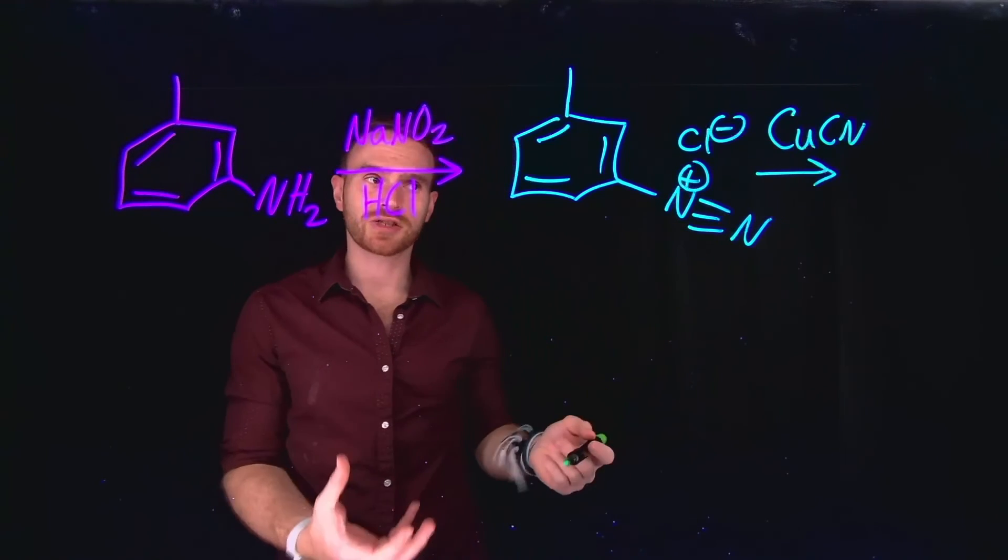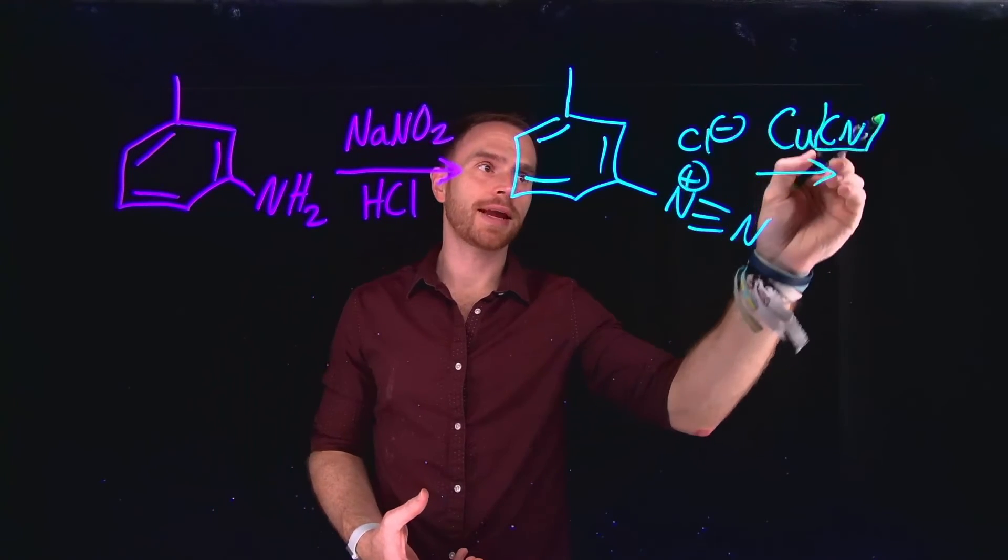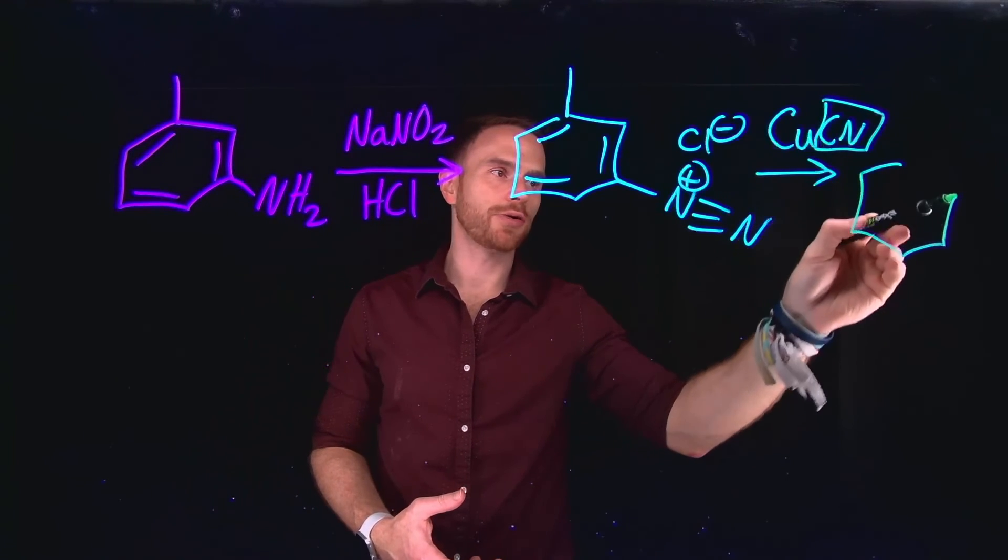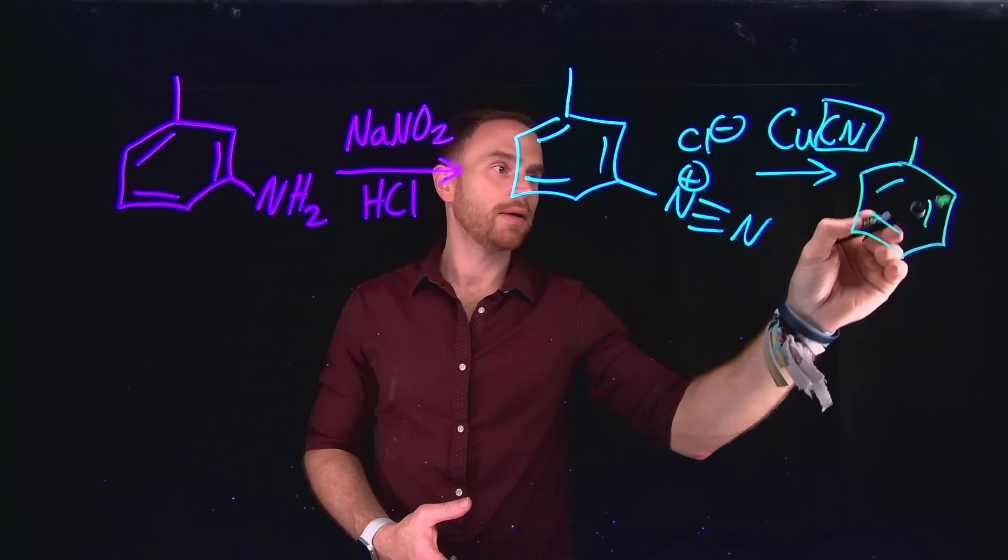we can actually exchange that diazonium salt for the anion portion of our copper salt. And this would allow us to generate a molecule like this one, which now has replaced that diazonium salt with a cyano group.